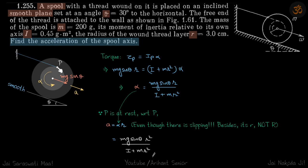So let us balance the torque about this point so we don't have to worry about the tension in the rope. When we write the equation of the torque about this point P, what we get is mg sin θ into r.